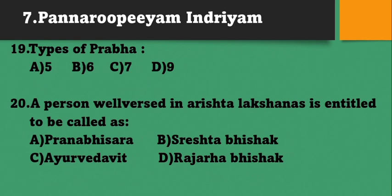Types of Prabha: options 5, 6, 7, or 9. The types of Prabha are 7. Option C. They are: Rakta, Pita, Siddha, Shyava, Harida, Pandura, and Asiddha. A person well versed in Arishtalakshanas is entitled to be called as Pranabhisara, Shrestha Vaidya, Ayurveda Vidya, or Raja Vaidya? He is called Ayurveda Vidya. Option C.